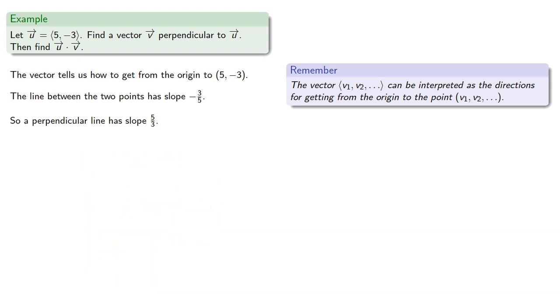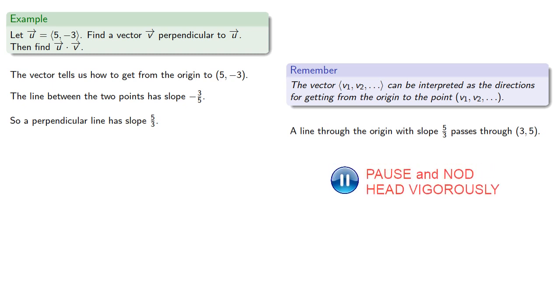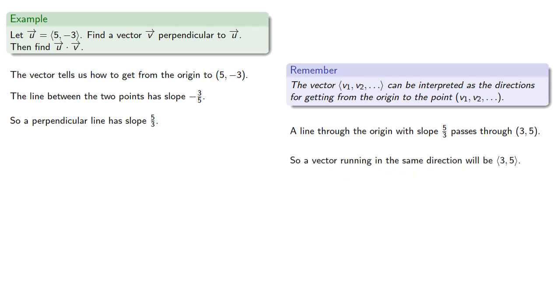Since the vector will tell us how to get from the origin to a point, we want to go from the origin to some point on a line with slope 5/3. So a line through the origin with slope 5/3 passes through the point (3, 5), and so a vector running in the same direction will be (3, 5).